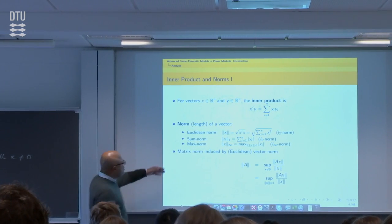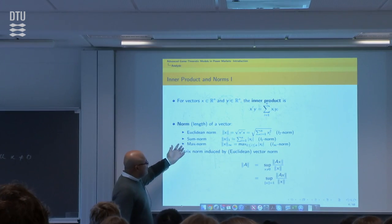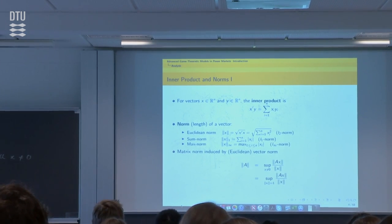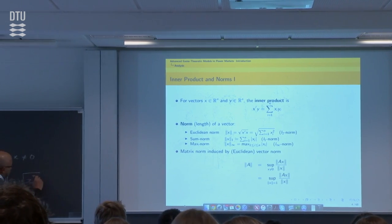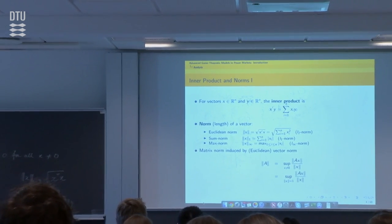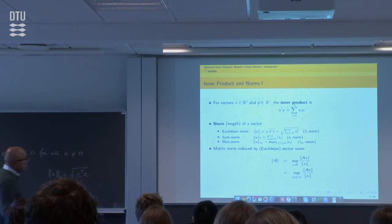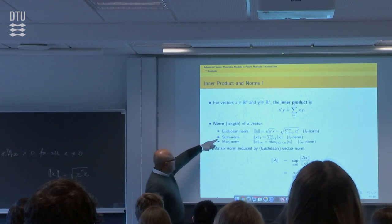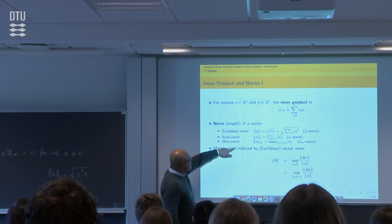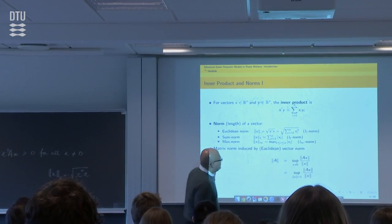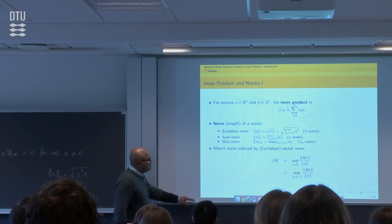We will be using Euclidean norms. The Euclidean norm of a vector is the square root of the sum of the squares, or more generally, X transpose X. We also have the one-norm, which is the sum of the absolute values, and the infinity norm, which is the max of the absolute values of the elements.